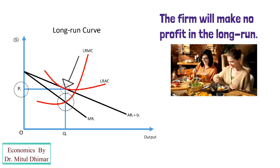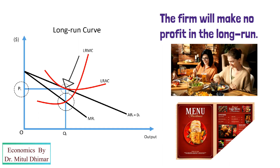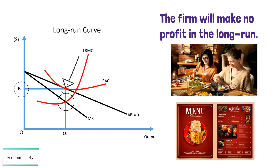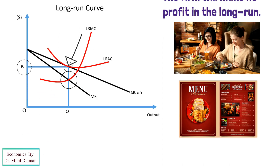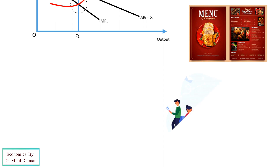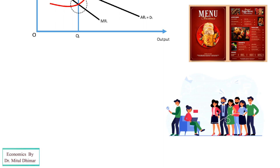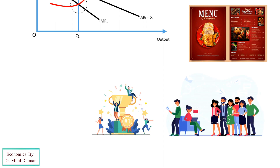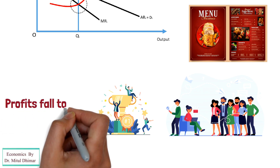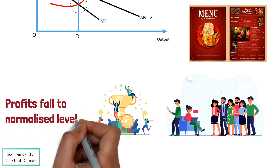There are many separate restaurants all competing on the basis of slight differences. However, they are all competing for the same customer, so due to higher levels of competition, profits fall to normalized levels.